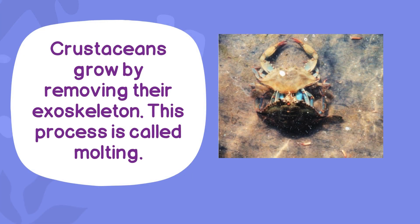Crustaceans grow by removing their exoskeleton. This process is called molting. Look at the crab — it has actually removed its exoskeleton. Wow, it's like removing a coat!